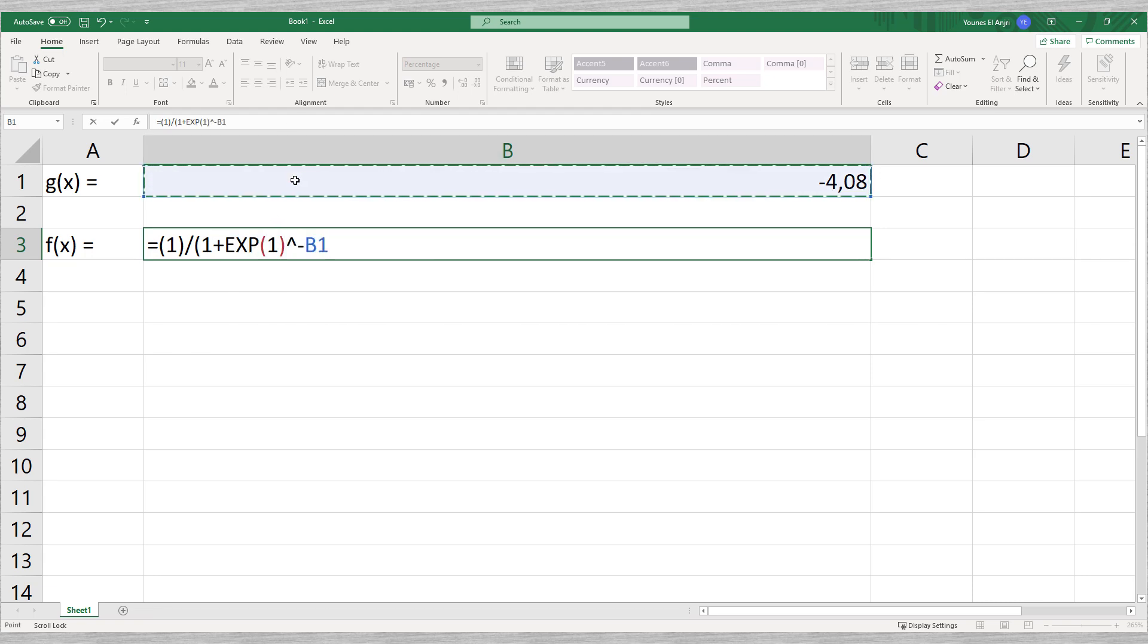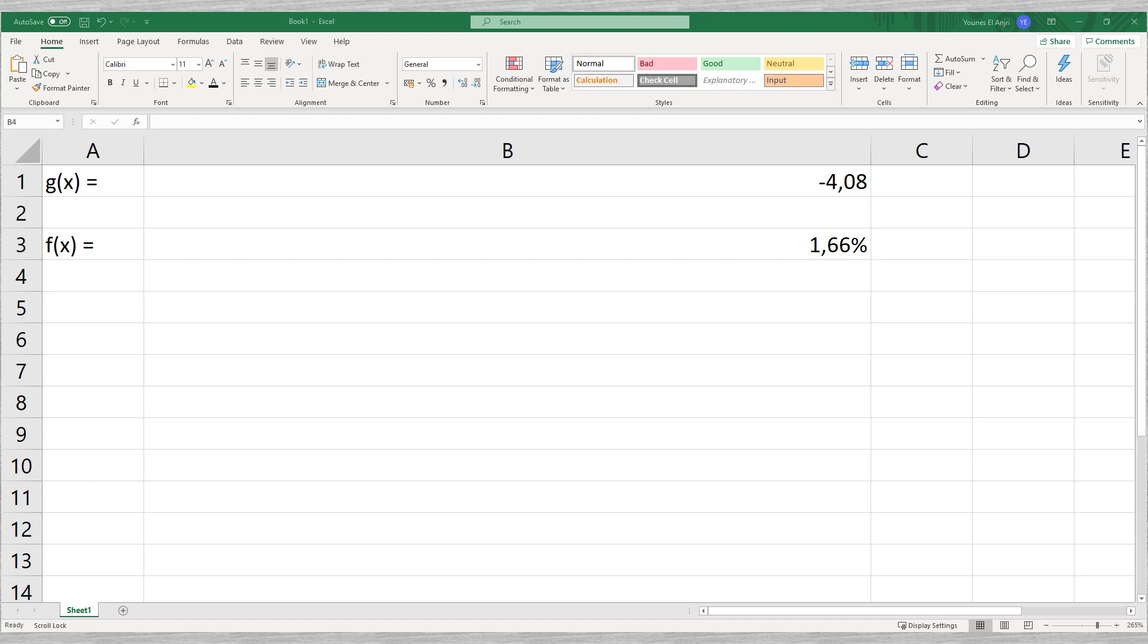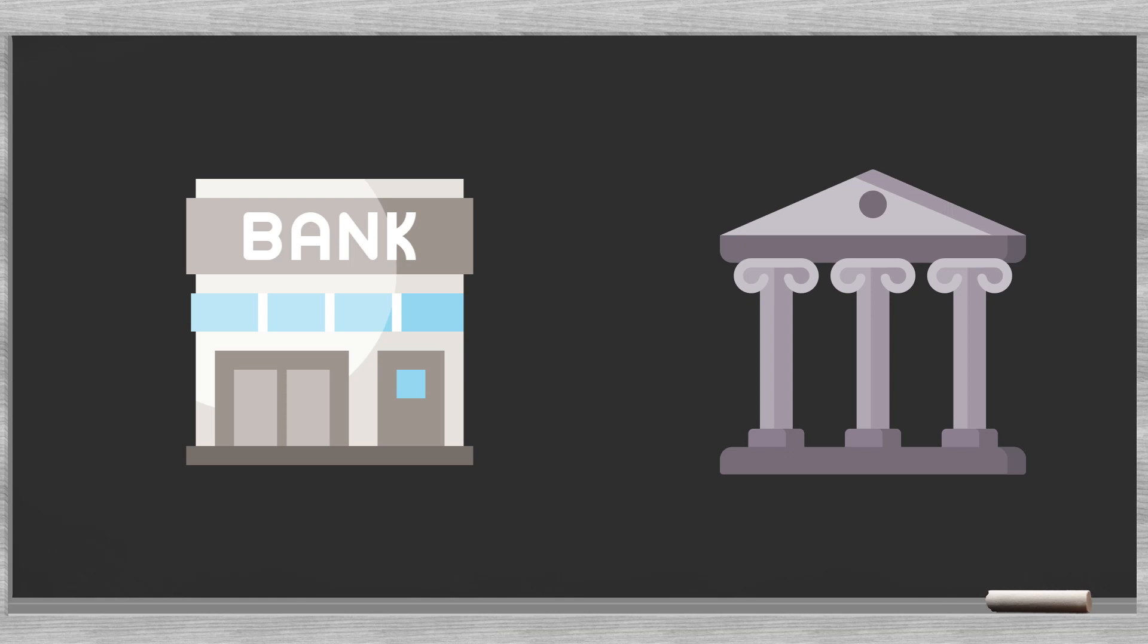Here we go. Our logistic regression model calculates that the probability of default for a 28-year-old male entrepreneur, bachelor, working in agriculture equals 1.66%. We can play with the inputs and get PDs for different clients. We can see how this model is useful for smaller banks and microfinance institutions.